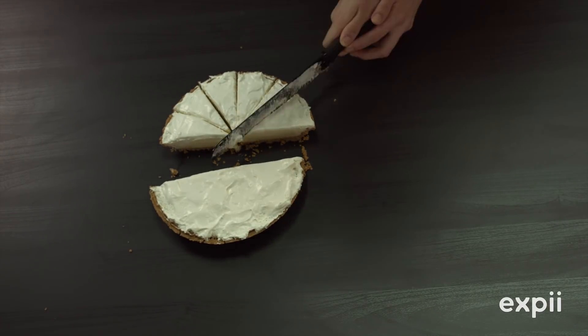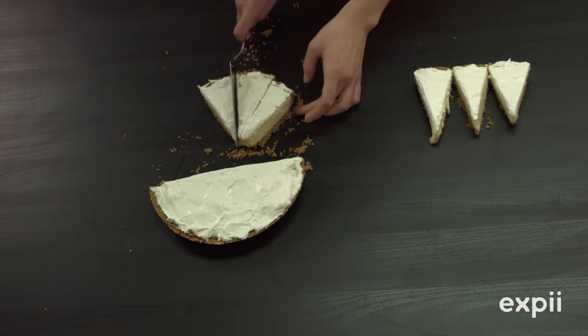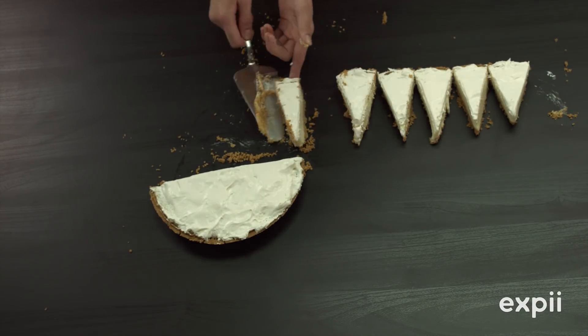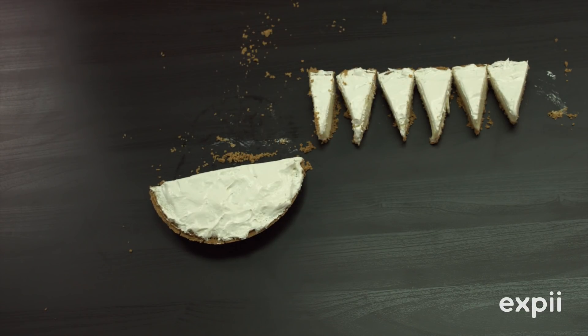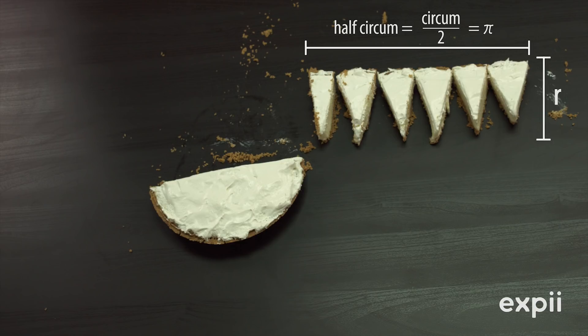If we cut this pie into tiny slices and line them up like such, we can create a rectangle. Notice the width of this rectangle is r, and since we took half the pie, the length is half the circumference, circumference divided by 2, pi r.